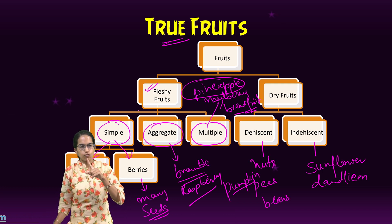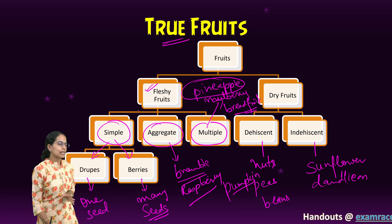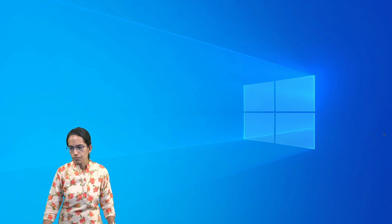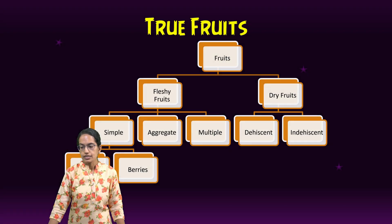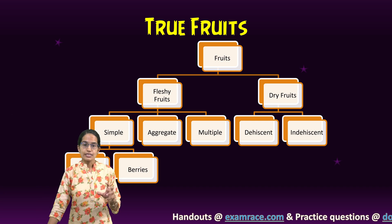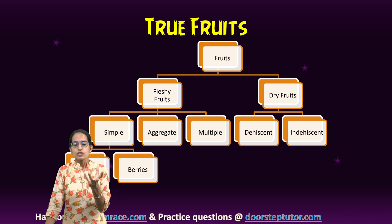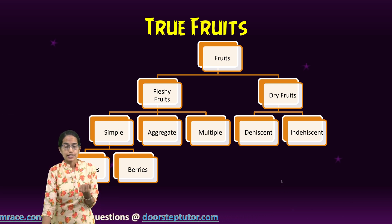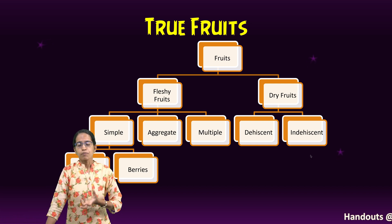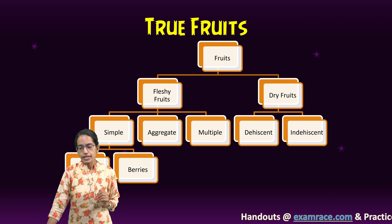This is the classification for true fruits: true fruits can be classified as fleshy fruits or dry fruits. Fleshy fruits have pulp, while dry fruits do not. Dry fruits can be dehiscent — with a covering, examples being nuts, peanuts, beans, and pumpkin — or indehiscent, with no such covering, examples being sunflower and dandelion.